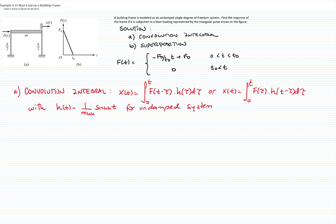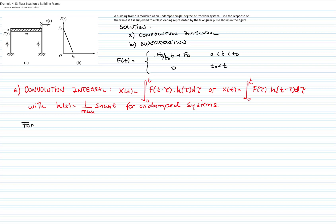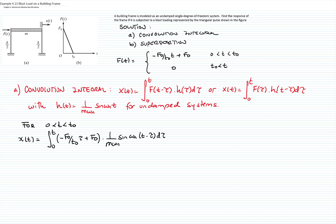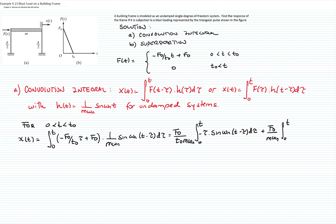Let's find the solution for 0 < t < t₀. Using the second form of the convolution integral, my solution will be the integral of the function in terms of τ — which is the slope of the ramp times τ plus f₀ — multiplied by 1 over m·ωₙ · sin(ωₙ(t − τ)) dτ. I will solve this integral in two parts: the first part involves negative τ times sin(ωₙ(t − τ)) dτ, and the second part is the constant f₀ divided by m·ωₙ times the integral of sin(ωₙ(t − τ)) dτ.